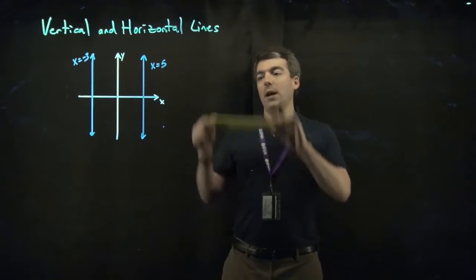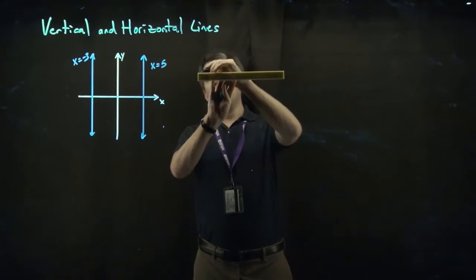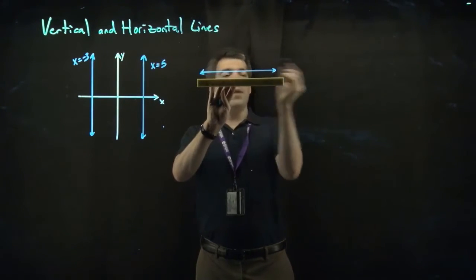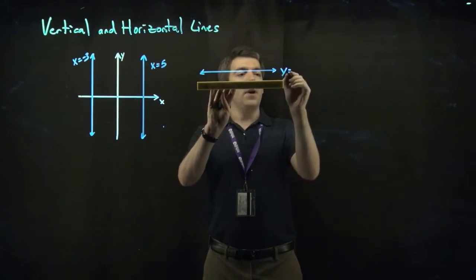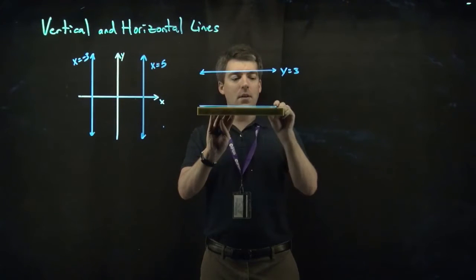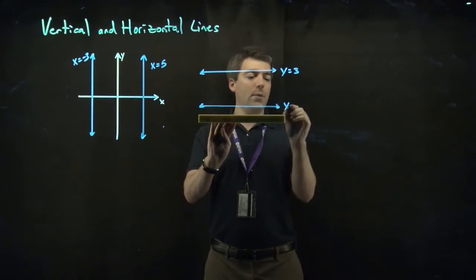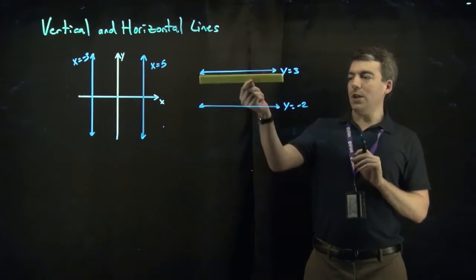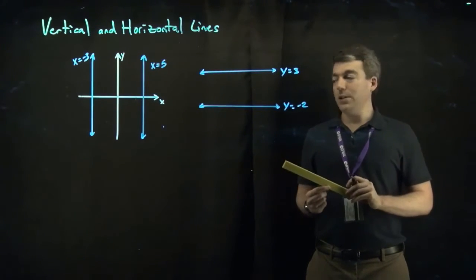Horizontal lines work the same way. So maybe we have a horizontal line over here, y equals 3, and another horizontal line, y equals negative 2. All horizontal lines are parallel to each other.